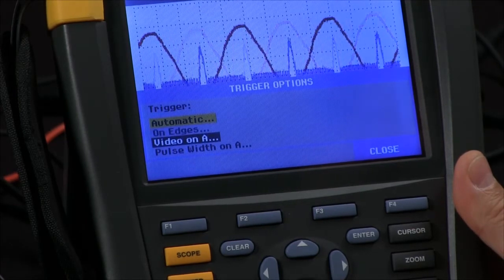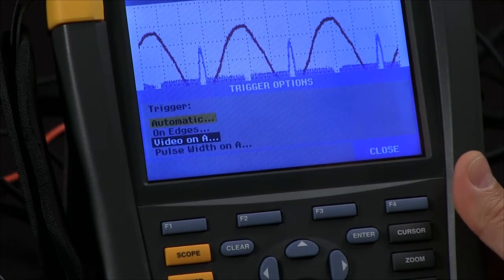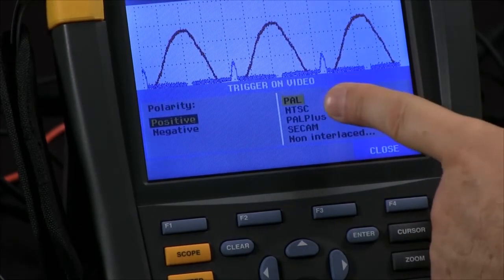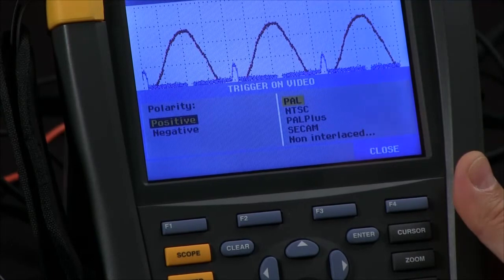We can also go in and trigger from a video signal on your A input, and from there we can select the respective type of video, whether it's PAL or NTSC or any option that is available.